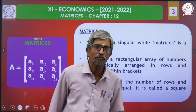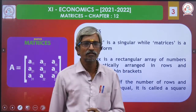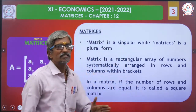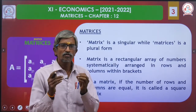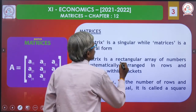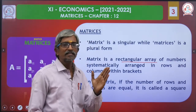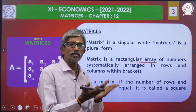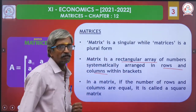Next, we will explore the matrices topic. Behind the screen, there is a picture showing elements a11, a12, a13, a21, a22, a23, and a31, a32, a33 — three into three columns, an example picture. A matrix is a rectangular array — array means an arrangement of numbers systematically arranged in rows and columns within brackets.